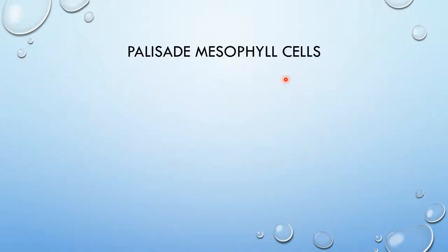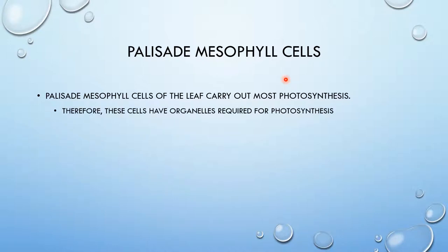The next cell is palisade mesophyll cells. They carry out most photosynthesis of a plant. Therefore, they have organelles required for photosynthesis. If you guys want, pause the video here and try to think of the organelles that you guys would expect to see in the micrograph.